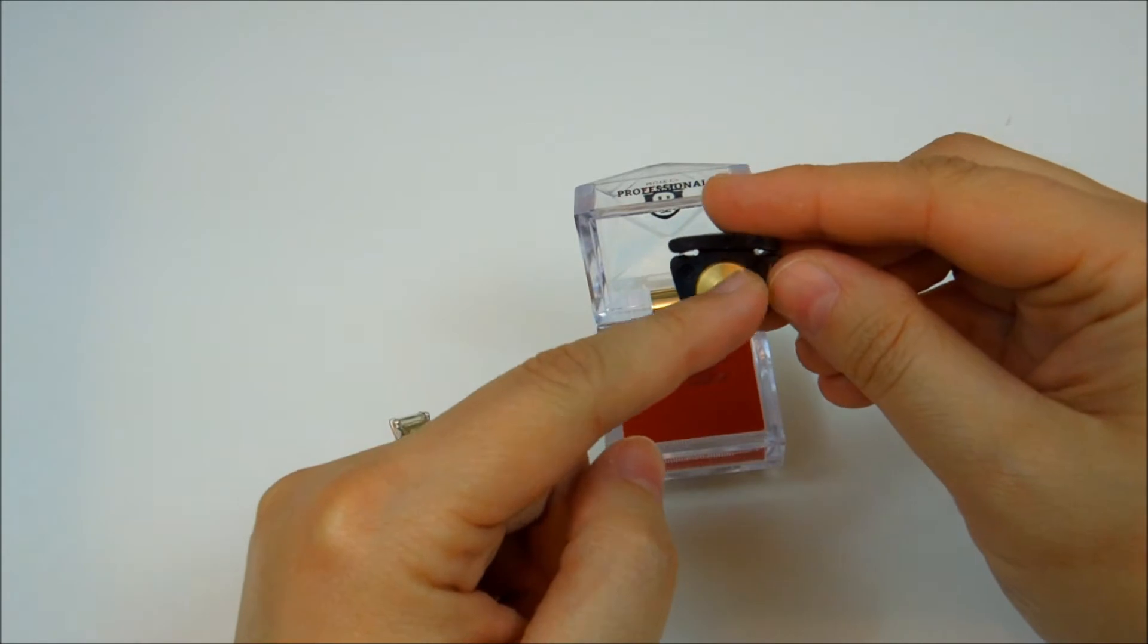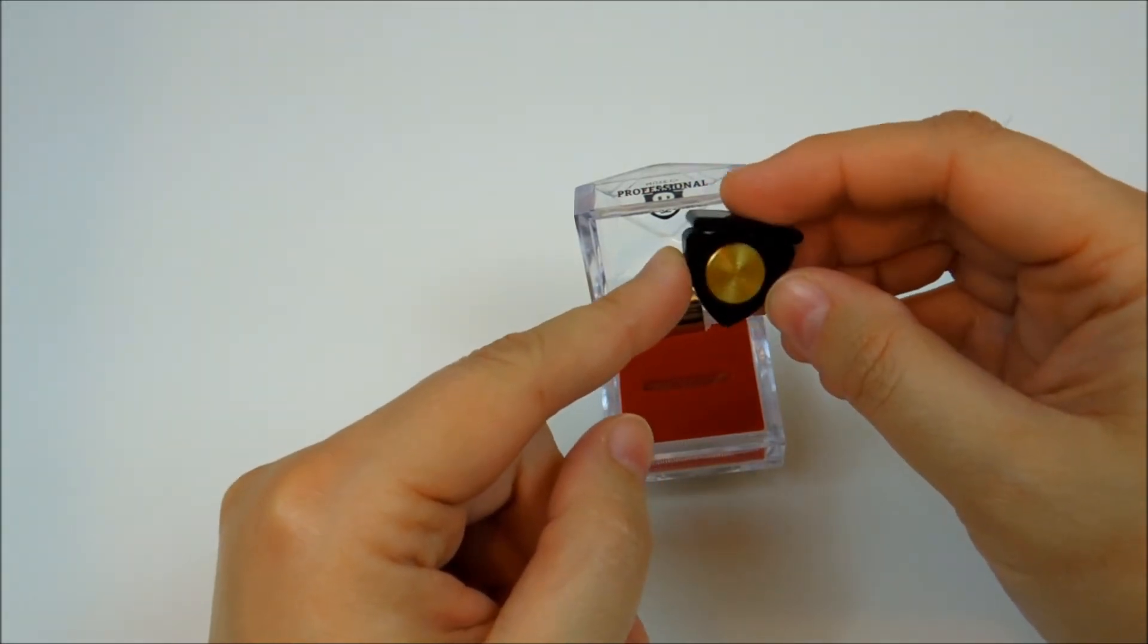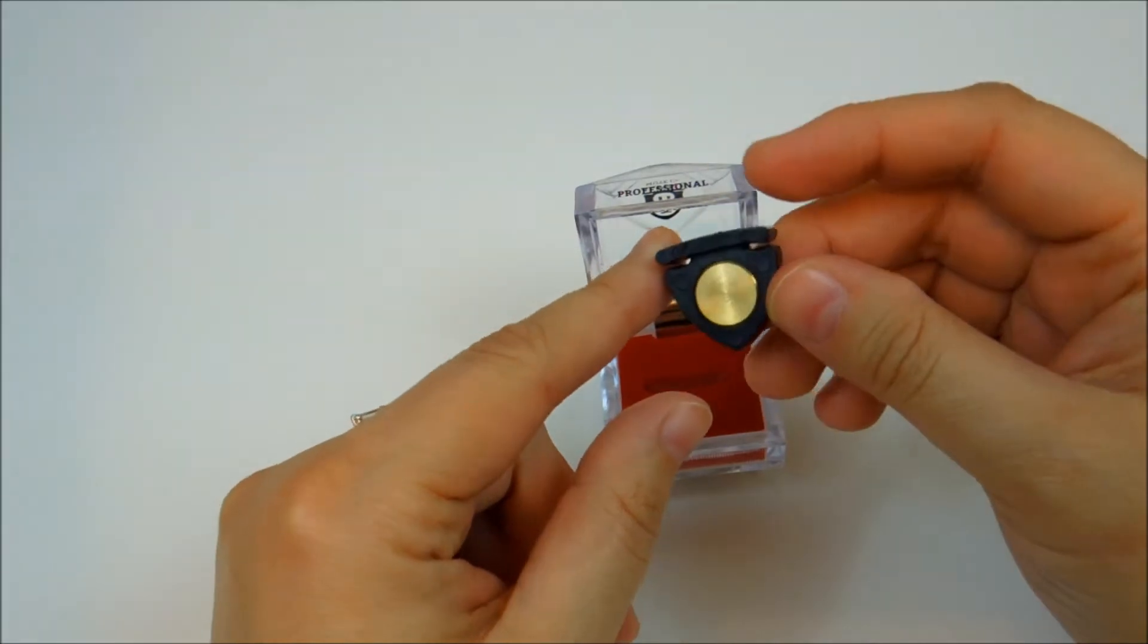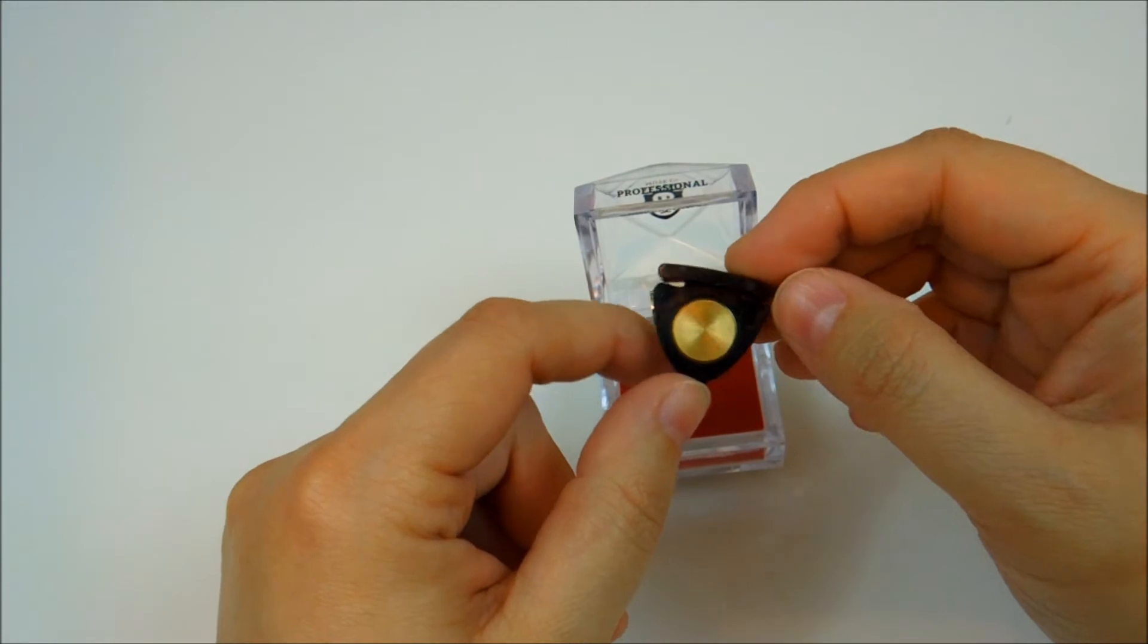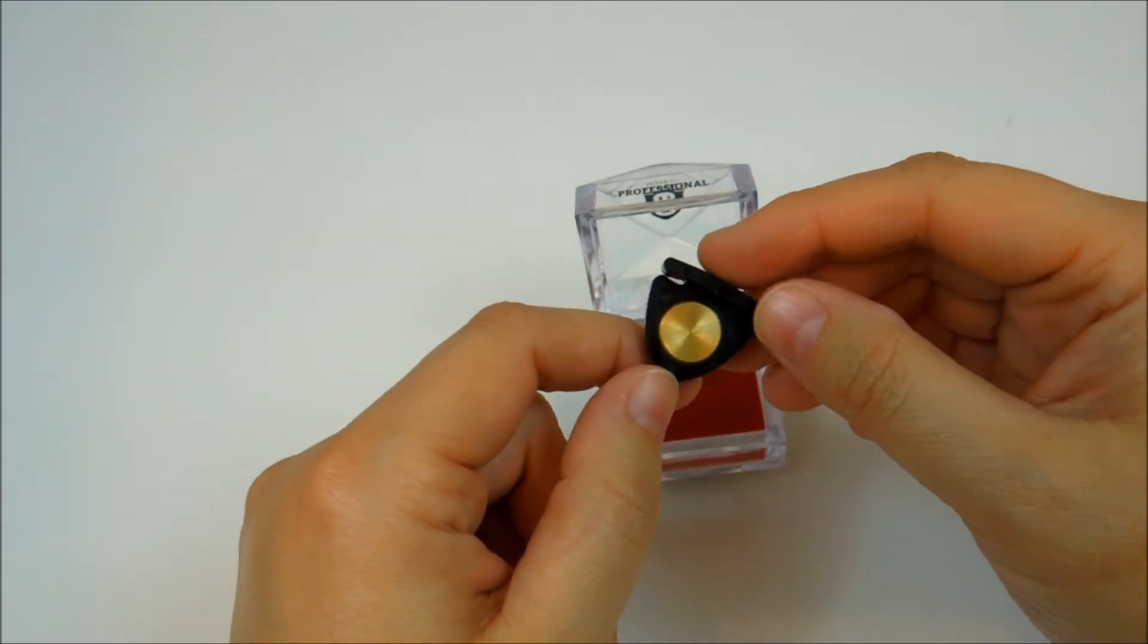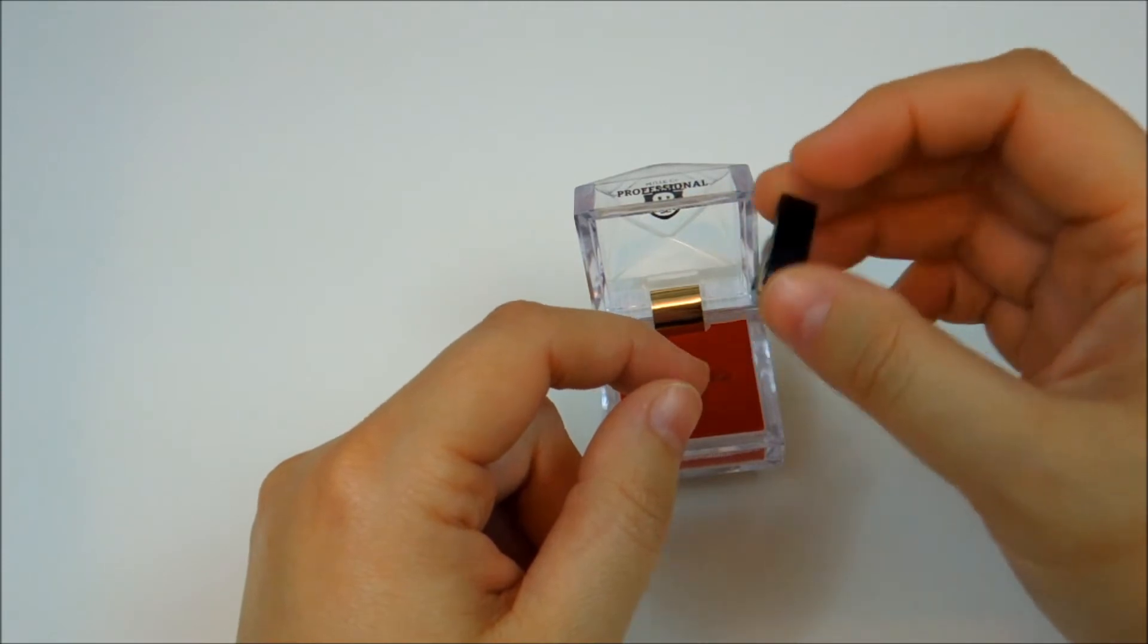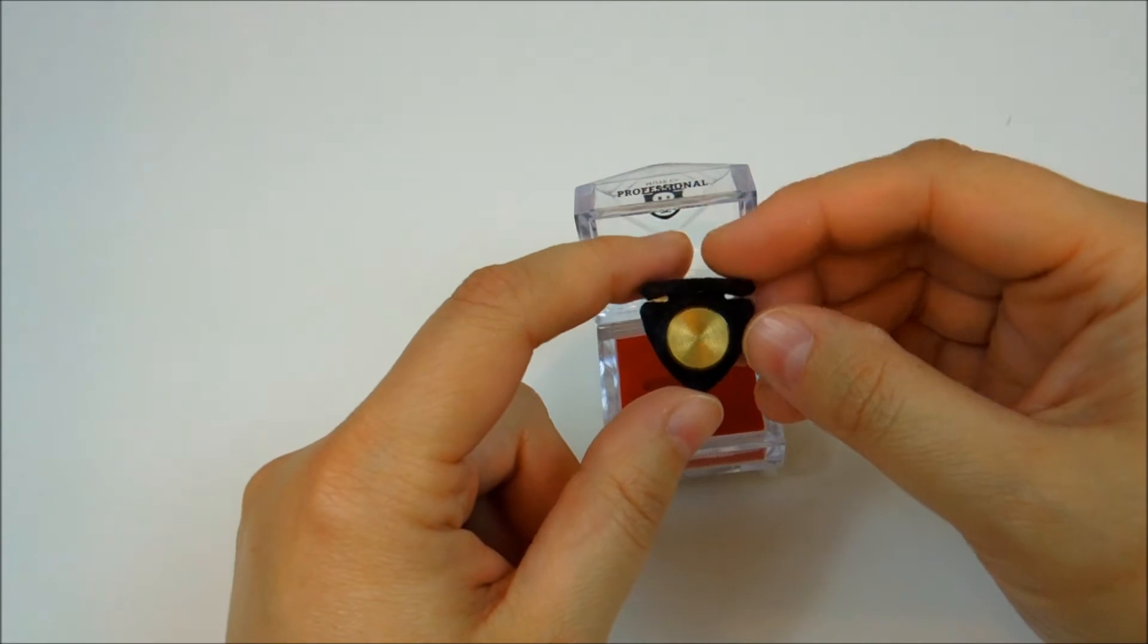The only difference between these two mutes is that the professional model has this brass insert here. The artist model is just all plastic. The construction of this mute is pretty much similar to many mutes you've probably seen on the market that we're all using. I just hate when you put the mute on the string and it starts to move all around—that's just the worst thing.